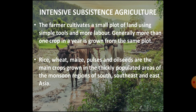Subsistence agriculture can be classified into intensive subsistence agriculture and primitive subsistence agriculture. In intensive subsistence agriculture, the farmer cultivates a small plot of land using simple tools and large amounts of labor. The farmer uses manure, artificial irrigation and better quality seeds to get maximum yield from the plot. Generally, more than one crop annually on the same plot is harvested. Intensive subsistence agriculture is practiced in the densely populated monsoon regions of south, southeast and east Asia. Rice is the major crop; some other crops are wheat, maize, pulses and oil seeds.